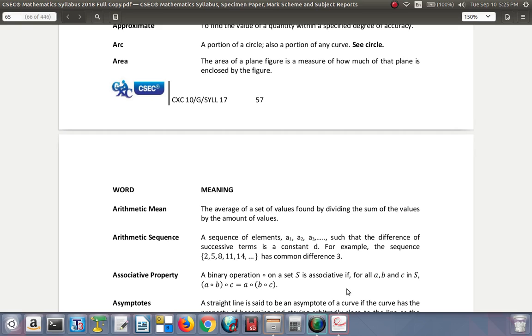Arithmetic sequence: a sequence of elements a₁, a₂, a₃, and so on, such that the difference of successive terms is a constant d. For example, the sequence 2, 5, 8, 11, 14 has a common difference of 3. The next term would be 17.